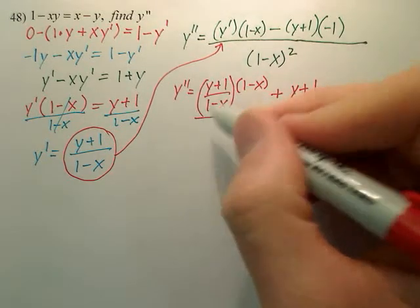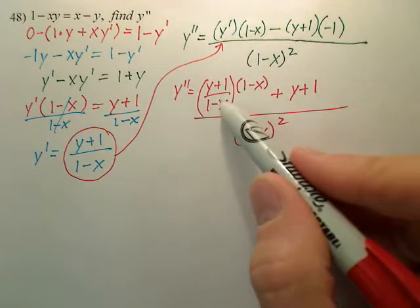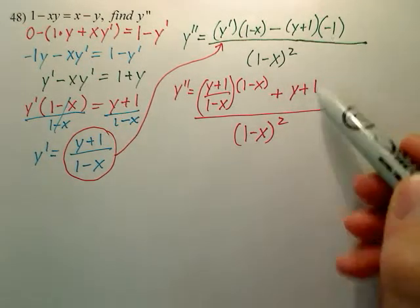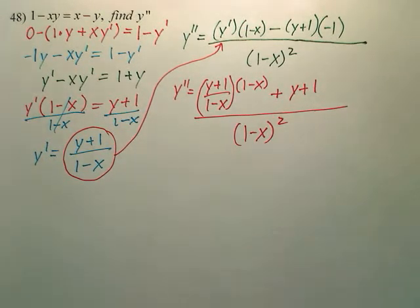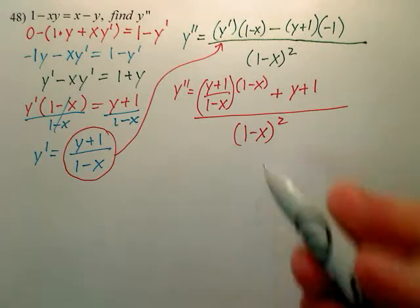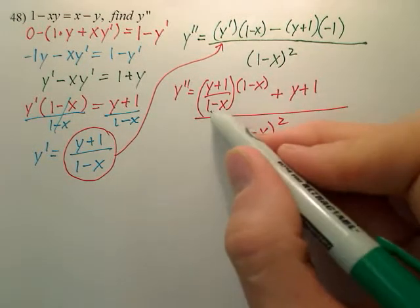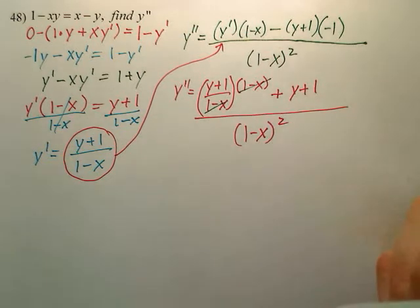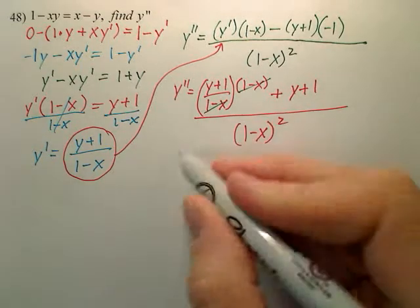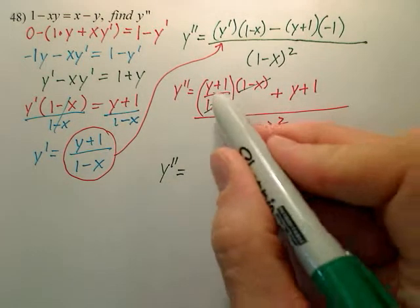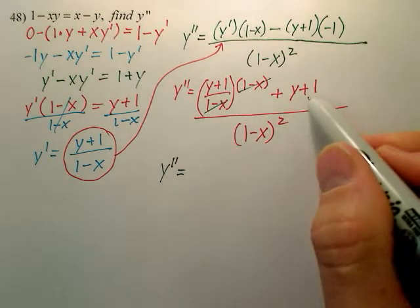So again, I replace the y prime right here. This I distribute the negative and the negative, accept a positive, so just leave that. Hopefully some of you see a nice little cancellation here. Yay, that makes life a little bit easier, otherwise we'd have to get a common denominator. Don't have to now. So it looks like we've got y double prime or the second derivative is equal to this plus itself.